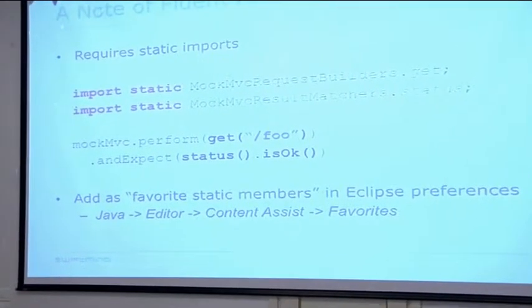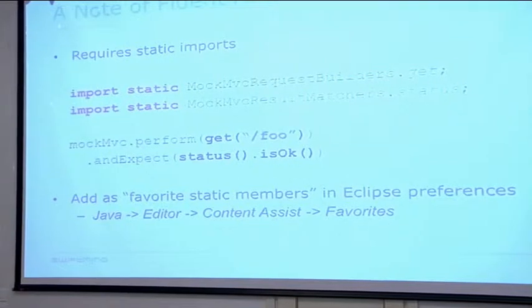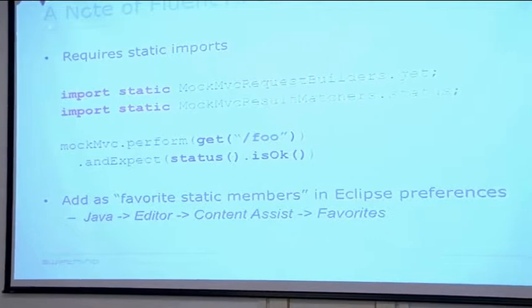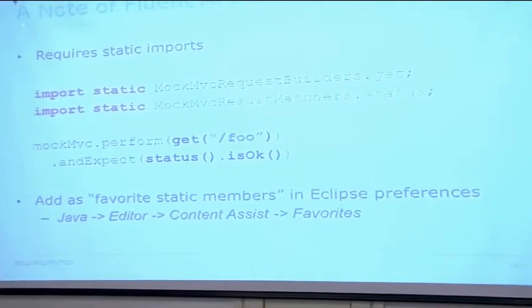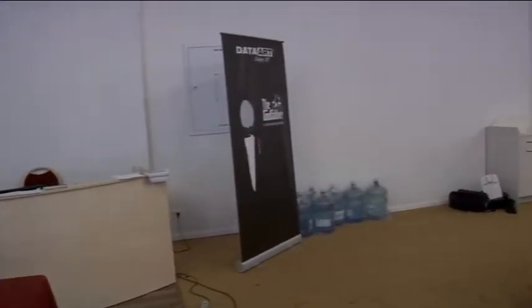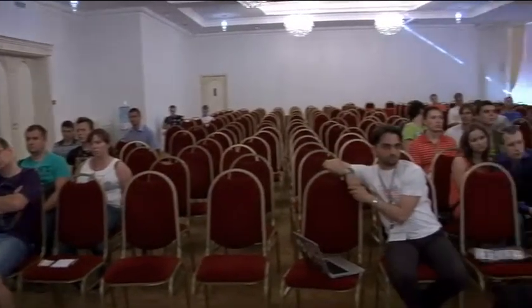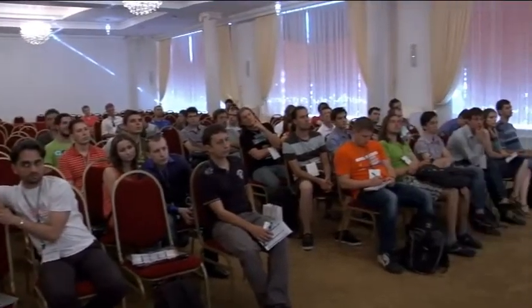About the fluent API: that setup method is a static method, and to make tests nice, readable, and get IDE code completion in Eclipse, you'll want to use static imports — for example, 'import static MockMvcRequestBuilders.get', etc. You can add these as 'favorite static members' in Eclipse Preferences → Java Editor → Content Assist → Favorites. This is highly recommended, and applies to things like Hamcrest matchers as well.